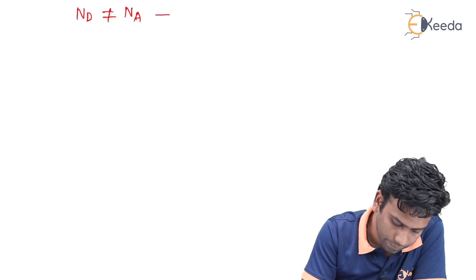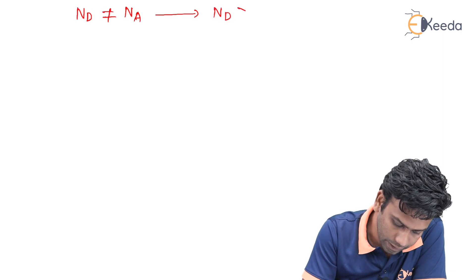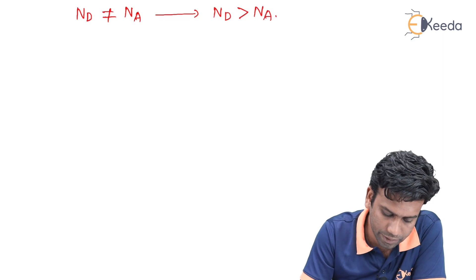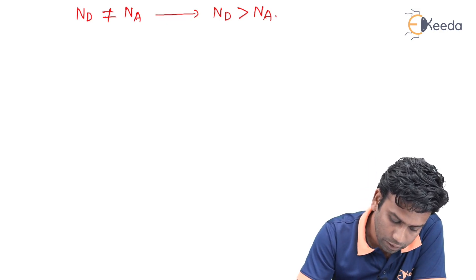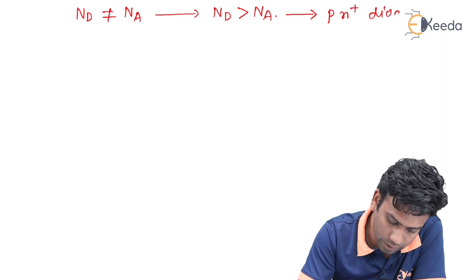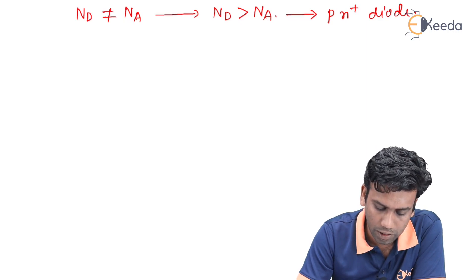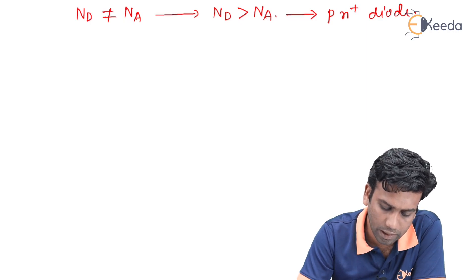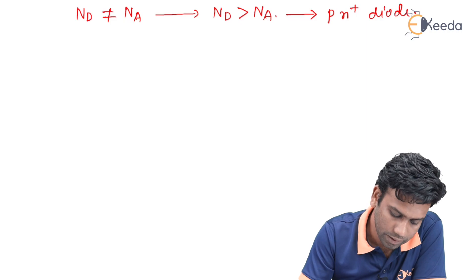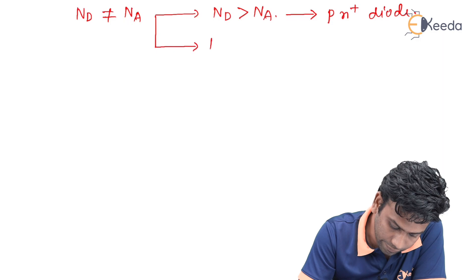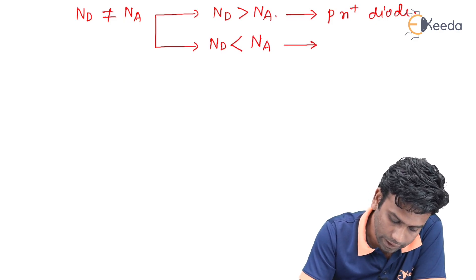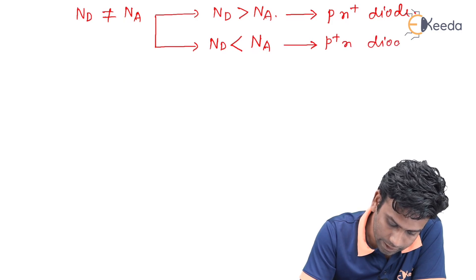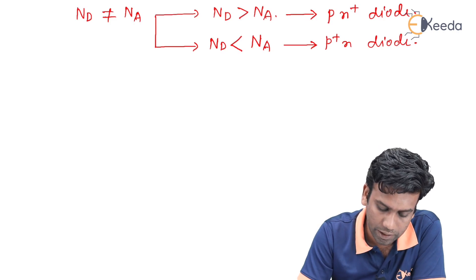If the N_D value is greater than N_A — meaning the doping concentration on the N side is greater than on the P side — then we call the diode a PN⁺ diode, because the N side is more highly doped. Similarly, if N_D is less than N_A, then we call it a P⁺N diode, as the P side is more highly doped.